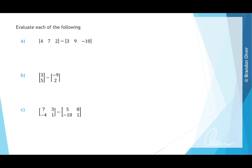For matrix subtraction examples: for part A, the two matrices have the same order, so we subtract each corresponding entry: 4 minus 3 is 1; 7 minus 9 is negative 2; 2 minus negative 10 is 2 plus 10, which is 12. For part B, the matrices have the same order, so: 3 minus negative 9 is 3 plus 9, which is 12; and 5 minus 2 is 3.